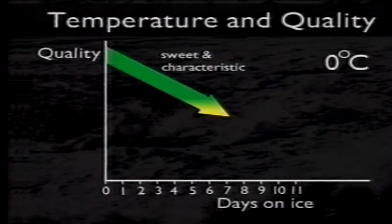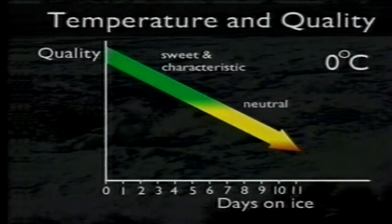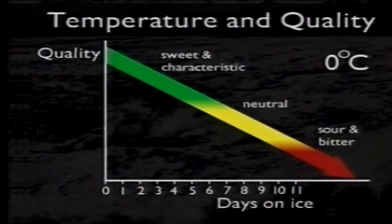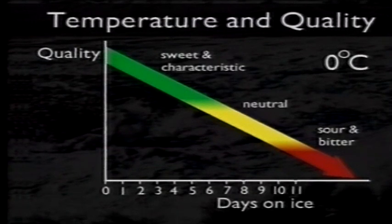All fish pass through three stages as they spoil. Initially, they're at their freshest and have a sweet and characteristic flavour. The fish gradually changes to a neutral flavour and eventually becomes sour and unacceptable to the consumer. The useful shelf life of fish is towards the end of the neutral stage.